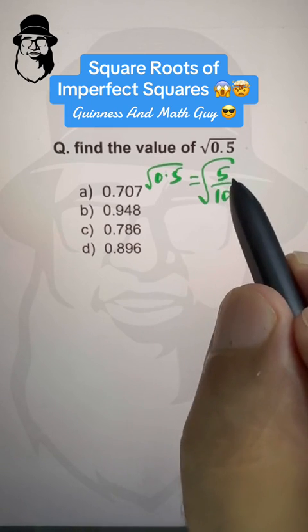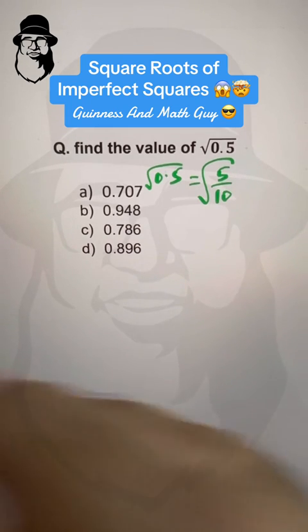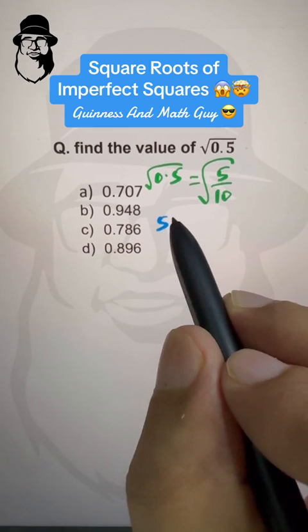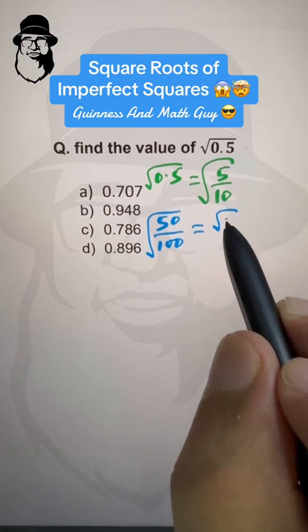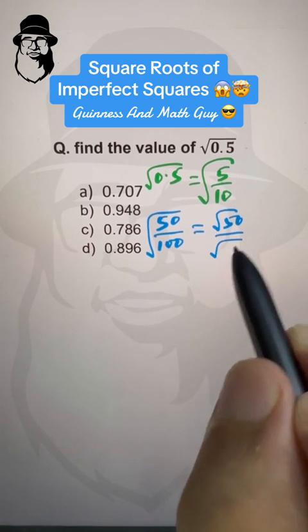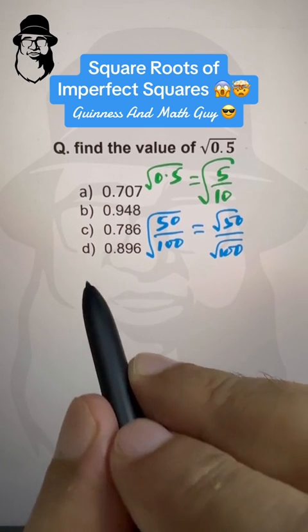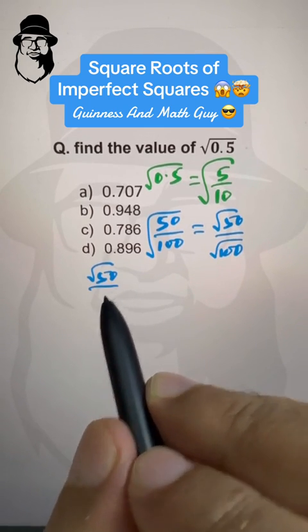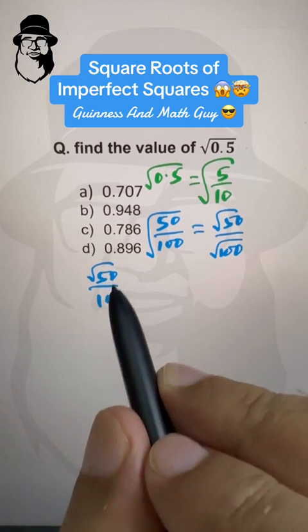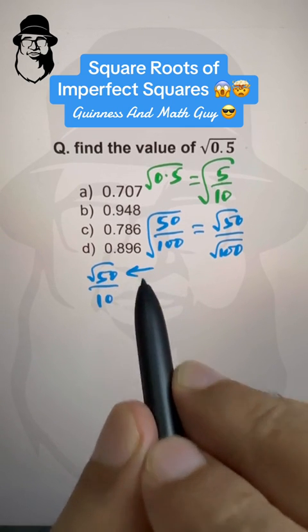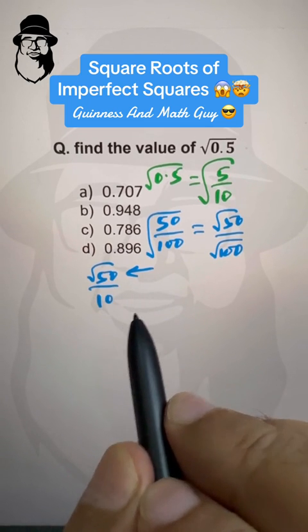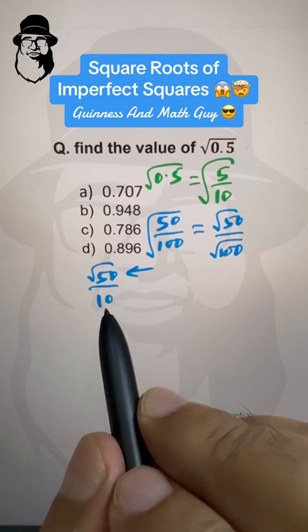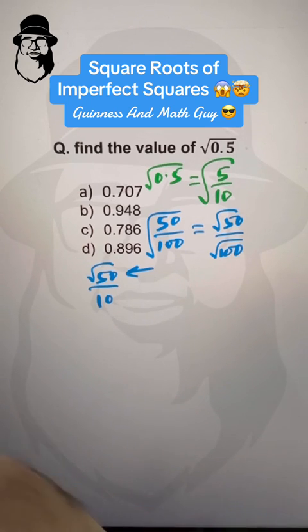And, multiply the numerator and the denominator by 10 to get 50 over 100, that is square root of 50 divided by square root of 100, and square root of 50 divided by 10. Now, we have to apply the method on only square root of 50, and whatever the final answer is, we'll divide that by 10.